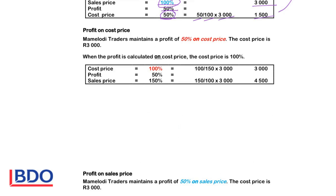In example 3, the profit is made on cost price, so the cost price is 100%, profit 50%, sales price 150%. In this case, the cost price is given — not the sales price — so next to the word cost price, we will show that it is R3000. If we want to calculate the sales price, the percentage that we want — 150 — divide by the 100 that we know, times 3000, and that will give me 4500. The percentage we want goes at the top, the one that I know at the bottom.